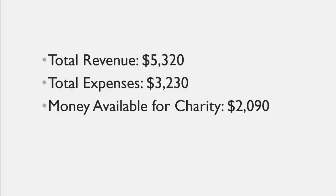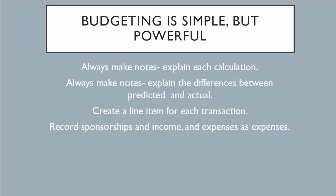I know this was a grind and we really put you through the ringer, but that's how you do budgeting and it gets easier every year. To recap: budgeting is simple but powerful. Always make notes. Record complicated transactions. Record the difference between what you predicted and what actually happened, and explain it — that makes next year so much easier. Have a line item for every transaction. Once you do one budget, it's going to be great. Get ready to watch Janine Norris' case study from Cupid's Cranium.